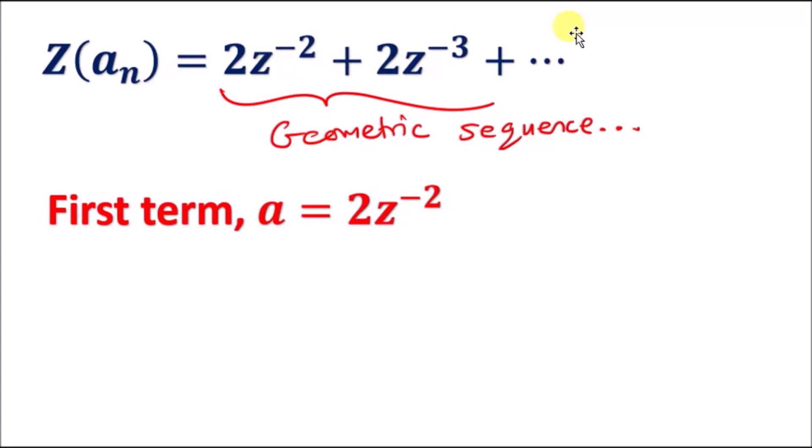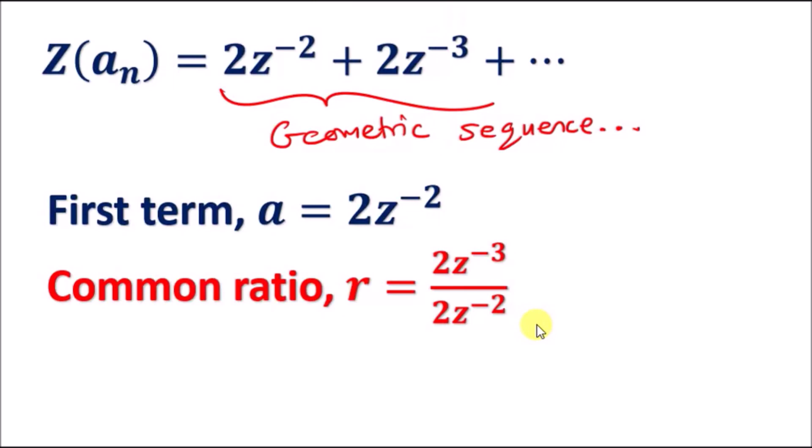Now the common ratio is literally when you divide term by term by the previous term, a bit like this: the second term over the first term. This will give us the common ratio r. Simplifying this one, you'll get z^(-1). If you did another term, for instance 2z^(-4) over 2z^(-3), that cancels down to z^(-1) and so on.